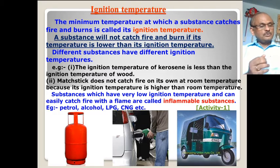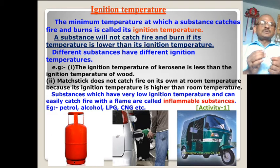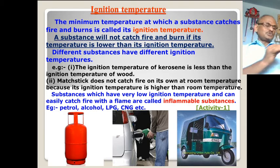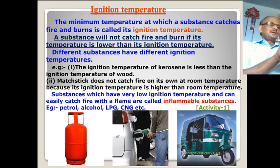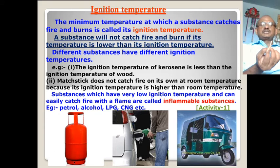A matchstick does not catch fire on its own at room temperature because its ignition temperature is higher than room temperature. When we strike a matchstick, our purpose is to raise the temperature of the phosphorus to its ignition temperature, and that is done by friction. Now it starts burning — you can see the carbon dioxide as smoke.